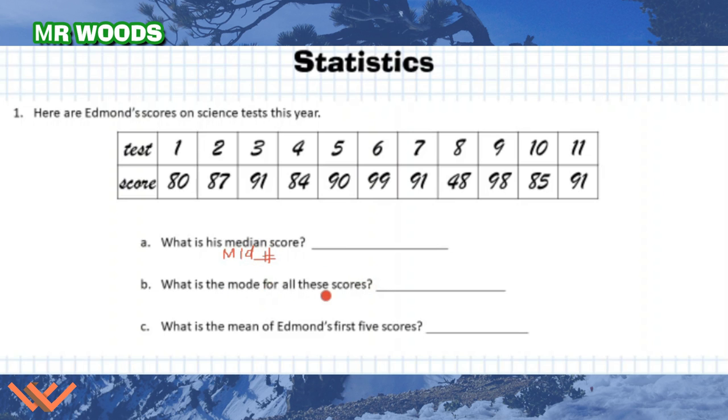So what is the mode for all of these scores? Well, the mode is the most frequent number. And I'm just going to say F-R-E-Q and then again number sign. And then what is the mean? Well, the mean is just the average, so I'm just going to put A-V-E. That's just a reminder for what I'm looking for.